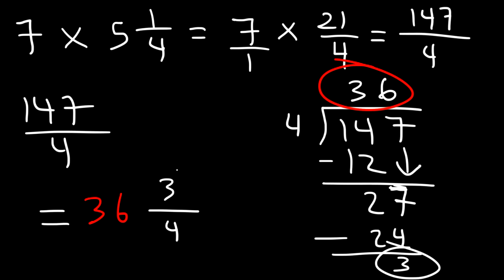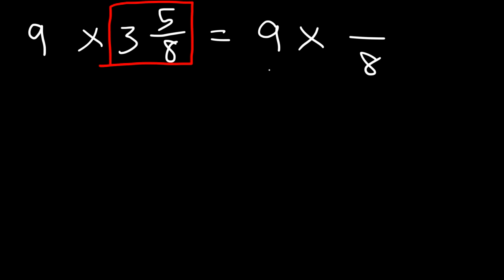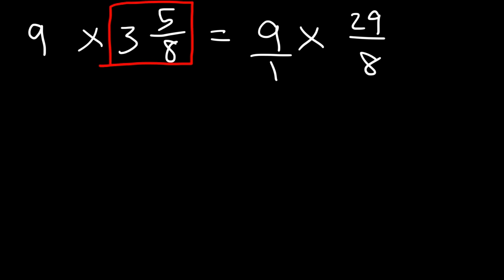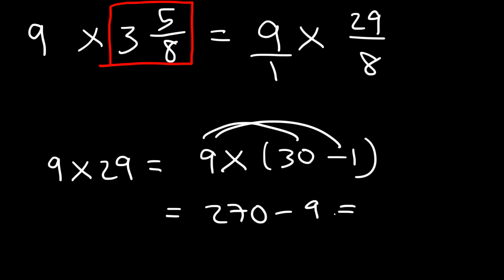Now let's multiply 9 by 3 and five-eighths. Convert the mixed number to an improper fraction: the denominator stays 8, multiply 3 by 8 to get 24, then 24 plus 5 is 29, so we have 29 over 8. Now multiply 9 by 29: think of 29 as 30 minus 1. 9 times 30 is 270, 9 times negative 1 is negative 9, so 9 times 29 is 261. We have 261 over 8.